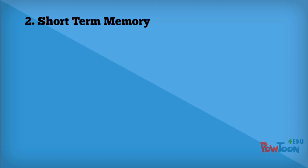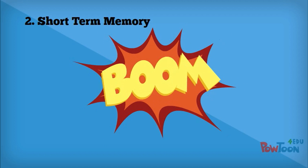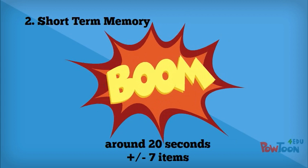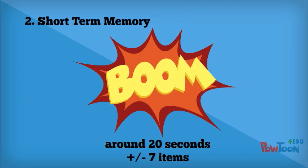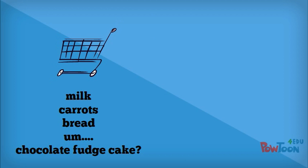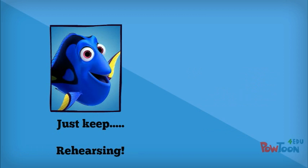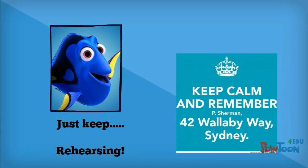The second store is the short-term memory. Here, mainly acoustic — that is, sound — information gets stored, and it gets stored for around 20 seconds, so everything I'm saying is going to be in your short-term memory for around 20 seconds. You can only fit a certain number of items in your short-term memory — think of trying to remember a shopping list or someone's phone number. If you rehearse the information, it will stay in your short-term memory for longer, and if you keep rehearsing it, it will transfer to your long-term memory.